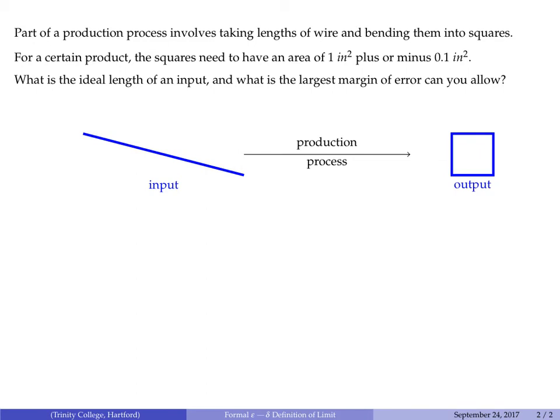Well, nothing is exactly one square inch, so we have some margin of error: exactly one square inch plus or minus a tenth of a square inch. Given this target range for our areas, what restrictions do we need to place on the inputs? What is the ideal length of input and the largest margin of error we can allow? Think about that question for a minute.